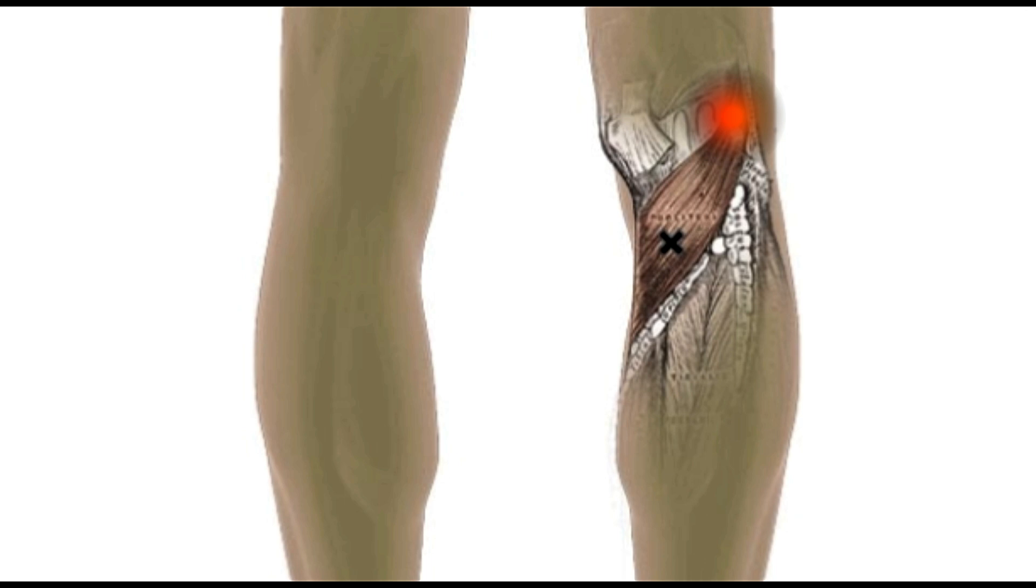As you run, as your foot strikes the ground and there is pronation of your foot, there's a twisting movement that occurs through the knee and this muscle will contract each time to reduce the twisting movement.